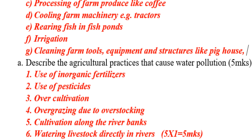Next: describe the agricultural practices that cause water pollution. Number one, use of inorganic fertilizers. Number two, use of pesticides. Number three, overgrazing due to overstocking. Number four, cultivation along river banks. Number five, watering livestock directly in rivers. We are through with this video; we thank you so much for watching.